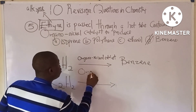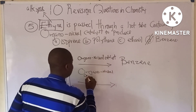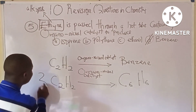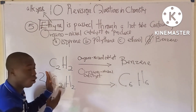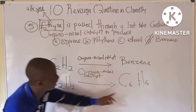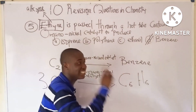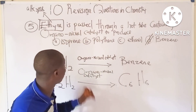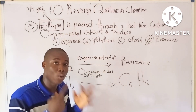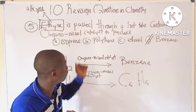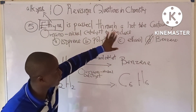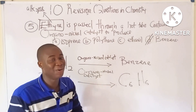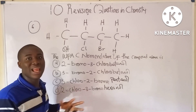The reaction is: 3C2H2 → C6H6 (benzene) with organo-nickel catalyst. Placing a coefficient of 3 balances the equation: 3×2 = 6 carbons and 3×2 = 6 hydrogens. The answer is benzene (C6H6). Isoprene is the monomer of natural rubber; polythene's monomer is ethene; and ethanol can be obtained from the hydration of ethyne.